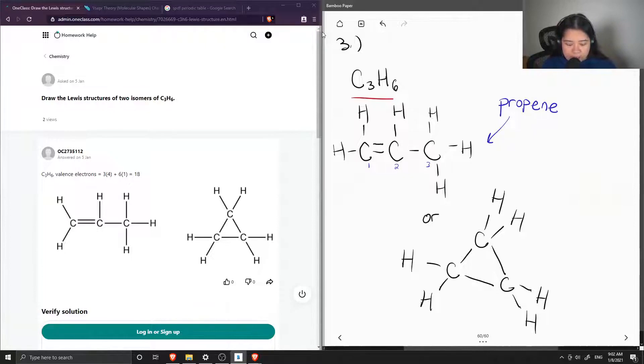So this is propene. In the case of our cyclic structure, when we have a hydrocarbon cyclic structure like this, we add 'cyclo' to the beginning.